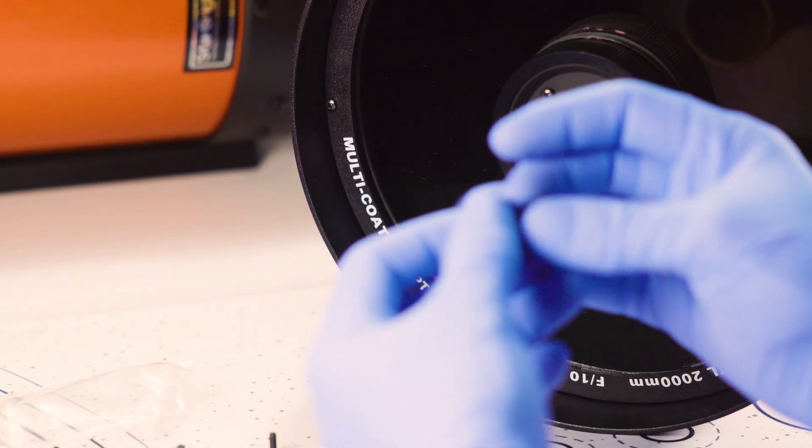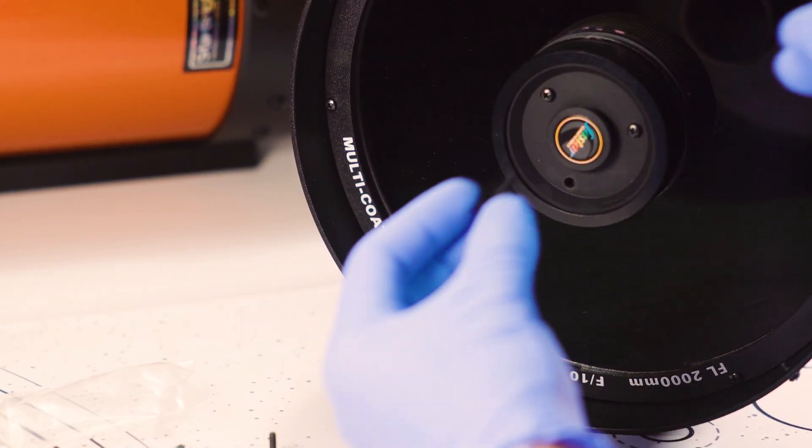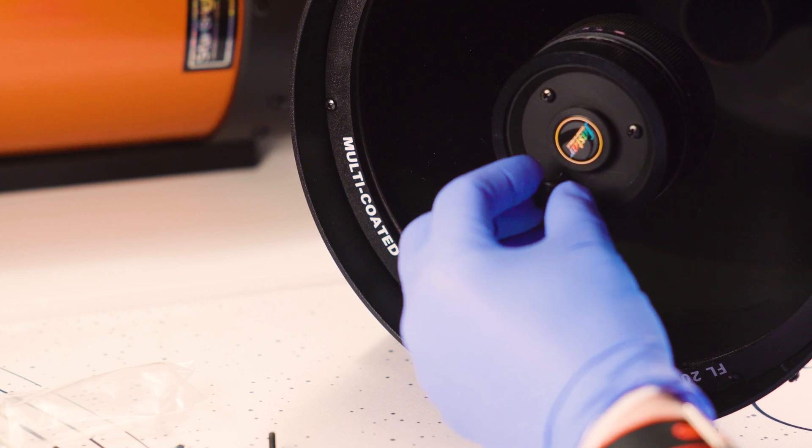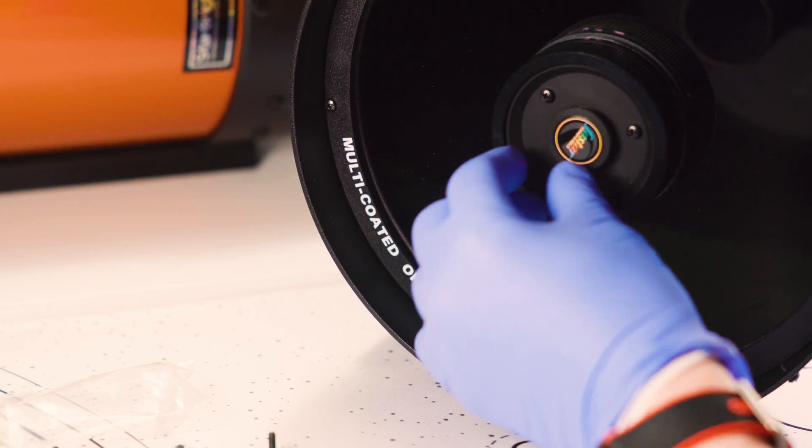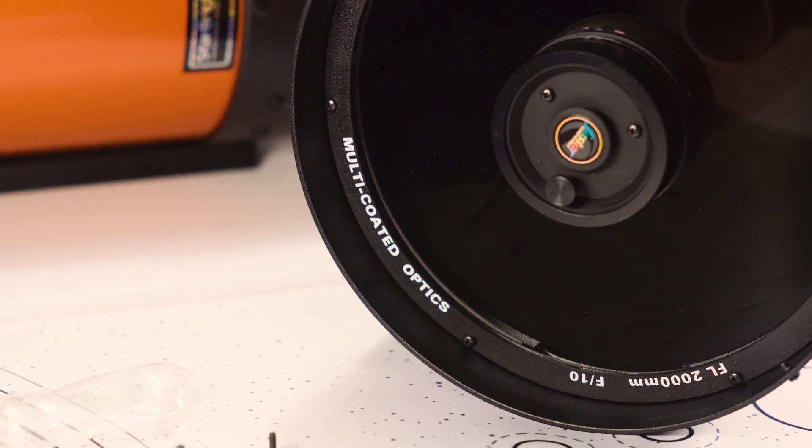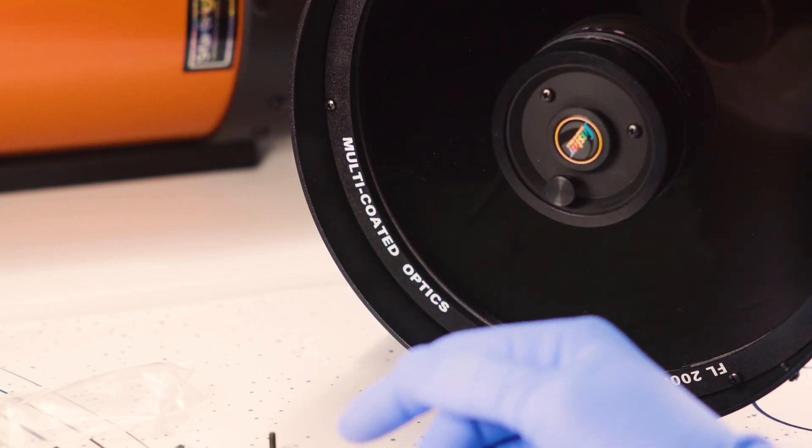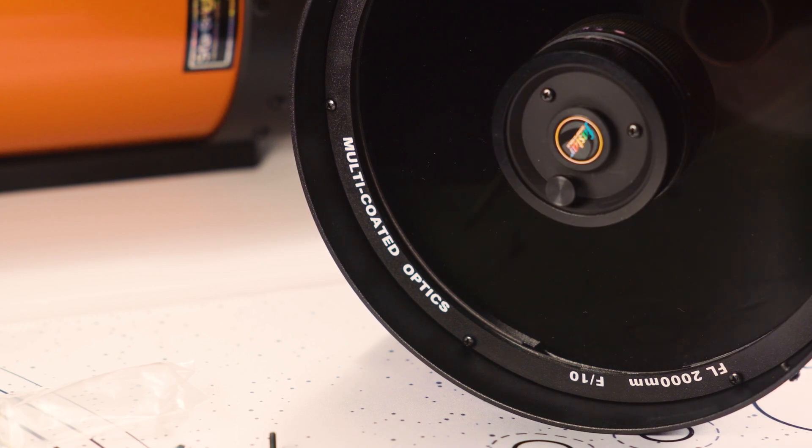So go ahead and just like we're doing with the 6 inch, put this in. And there we go. Now you would just repeat the process for these remaining two screws like we're going to be doing on the 6 inch version.